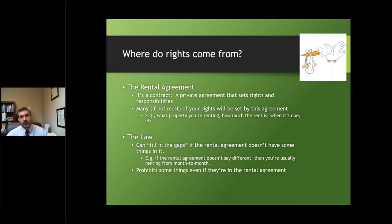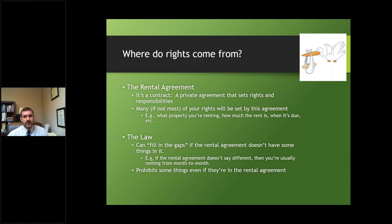The Residential Landlord Tenant Act and common law fill in the gaps when the rental agreement doesn't address something, or when the rental agreement has a provision that is prohibited by law. For example, landlords are required to maintain certain things — plumbing systems, electrical systems — the big things. If a door gets damaged or taken off its hinges, that's the landlord's issue. The landlord often cannot shift onto the tenant the obligation to maintain the fitness or habitability of the property. The Residential Landlord Tenant Act would trump any lease provision that contradicts it.